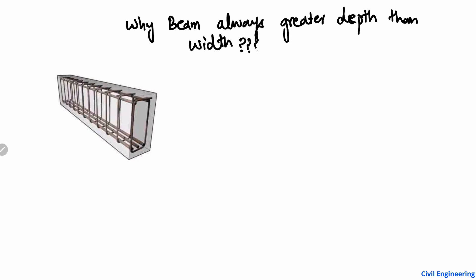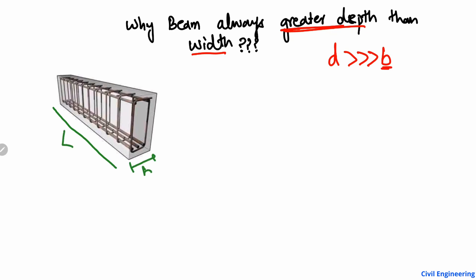We are going to answer this question in a really simple and easy way. For example, D (depth) is always greater than B (width) of the beam. Here you can see a reinforced concrete beam with three dimensions: L is the length of the beam, B is the width, and D is the depth.